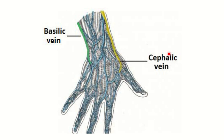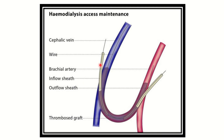Both the cephalic vein and basilic vein are superficial structures because they are located outside the deep fascia. The whitish structure here is the deep fascia, and both veins lie outside it — confirming they are superficial structures of the upper limb.